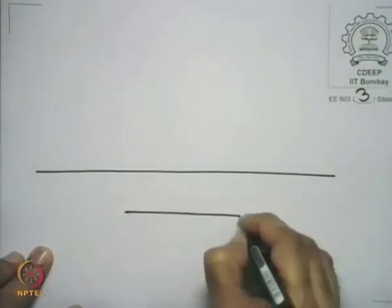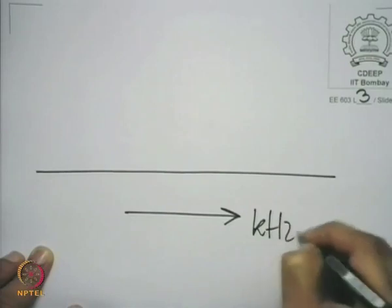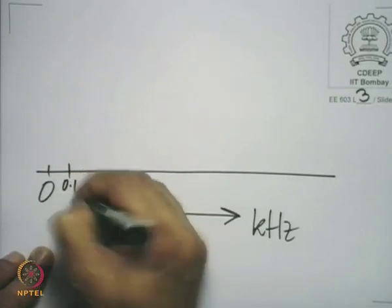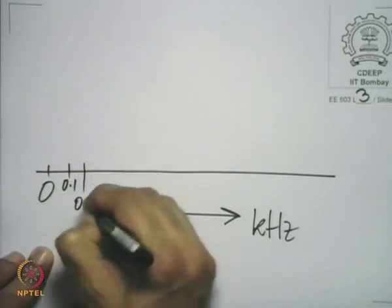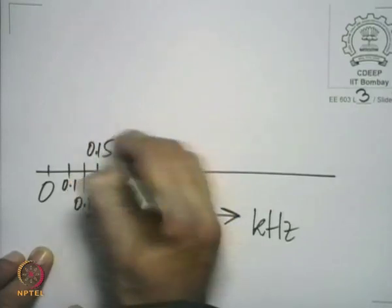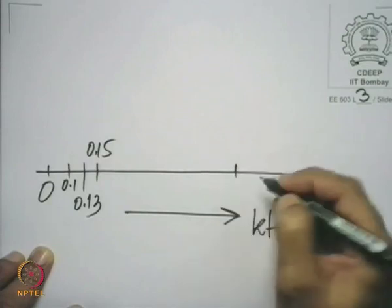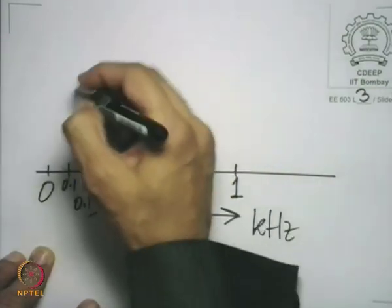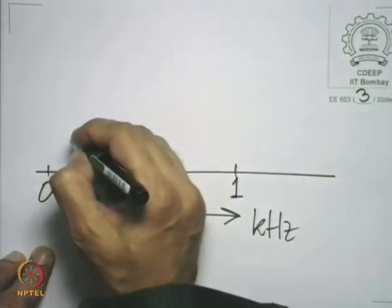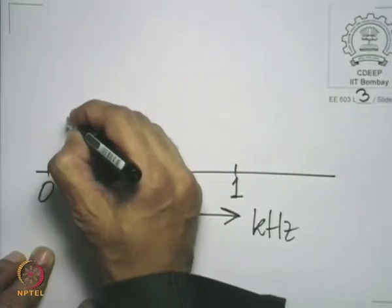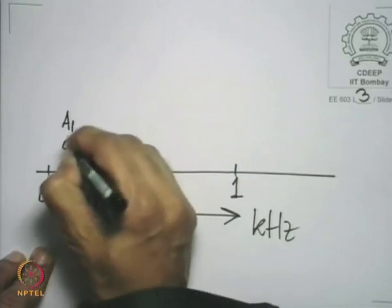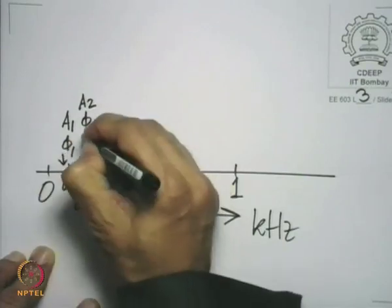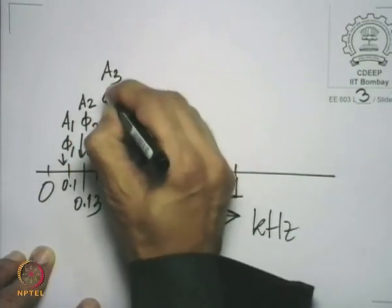We have done the exercise for one sine wave, but let us do it when you have a few sine waves. Suppose we have a 0.1 kilohertz sine wave, a 0.13 kilohertz sine wave, and a 0.15 kilohertz sine wave. Let us give their amplitudes some values: amplitude A1 phase φ1, amplitude A2 phase φ2, and amplitude A3 phase φ3.